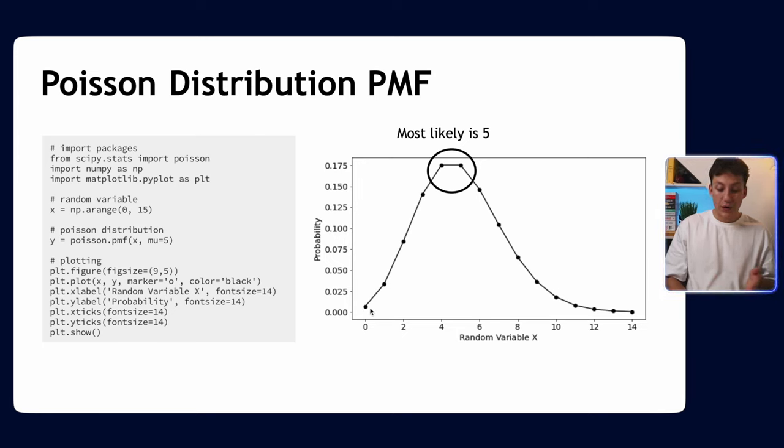Either side of that mean rate, we're very unlikely to get zero, more likely to get one, more likely to get two, and it slowly climbs up until five. Then it tails off again as we get to more extreme values. The more we get away from the mean rate, the less likely that count is going to happen in that time period. Should be quite intuitive.